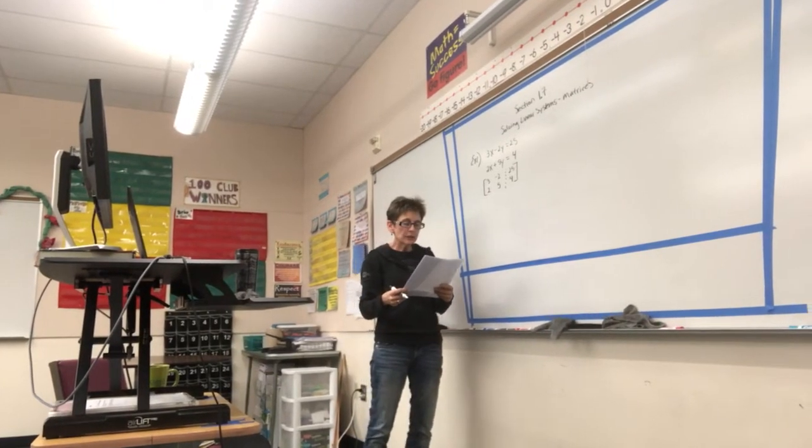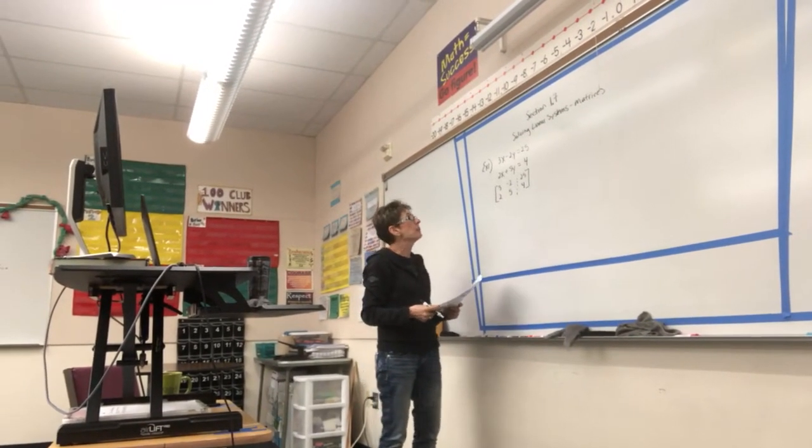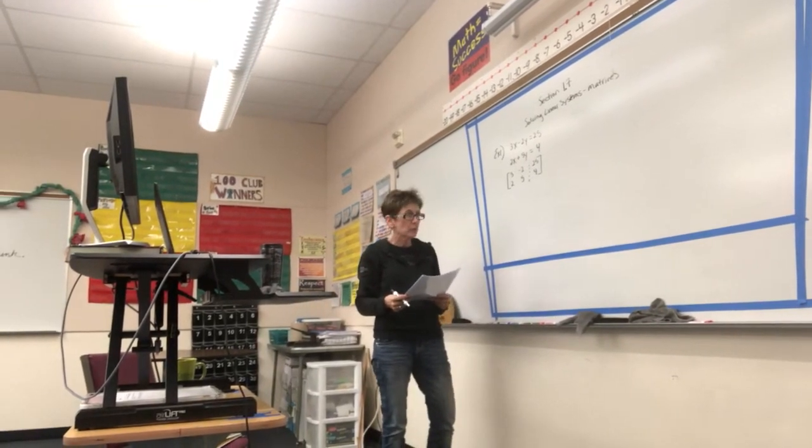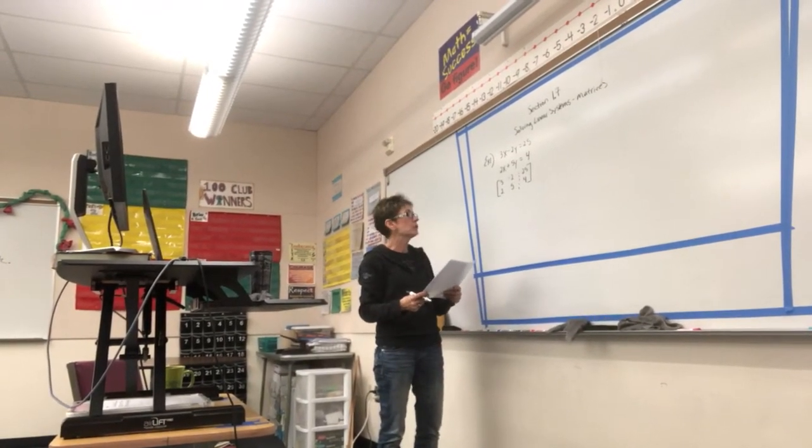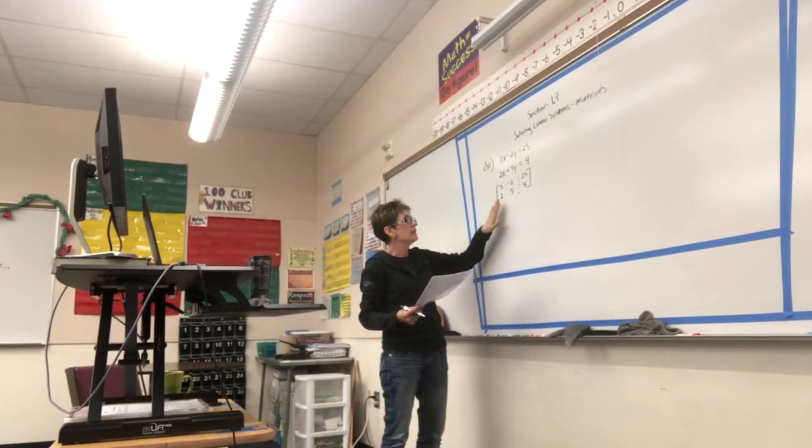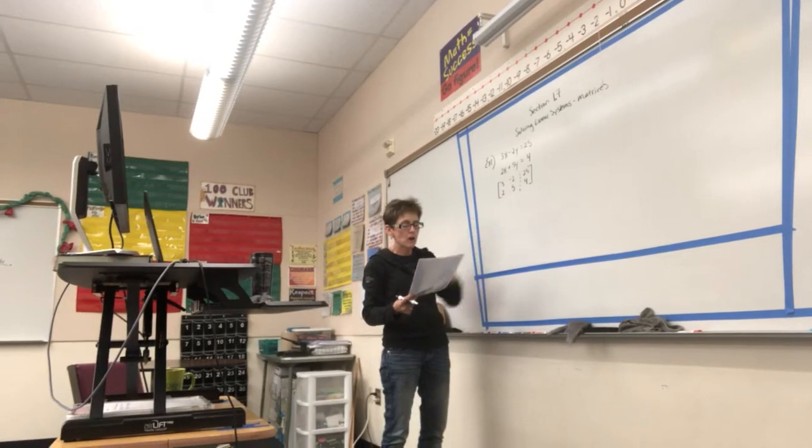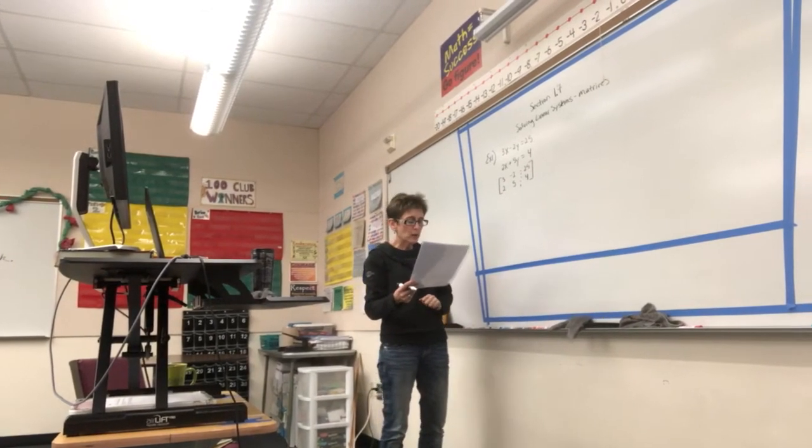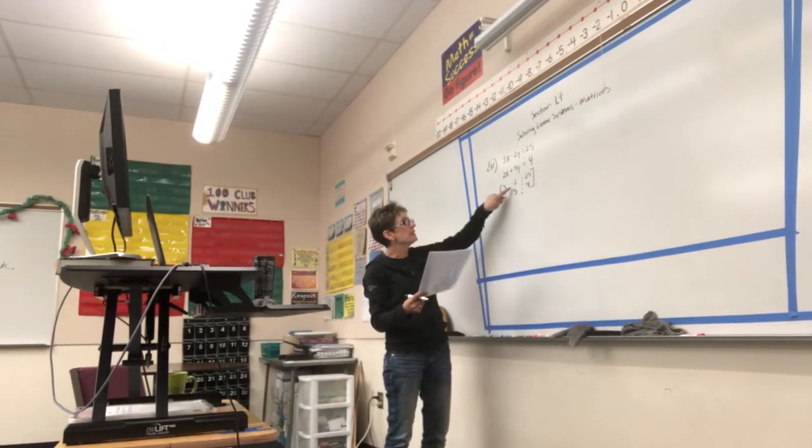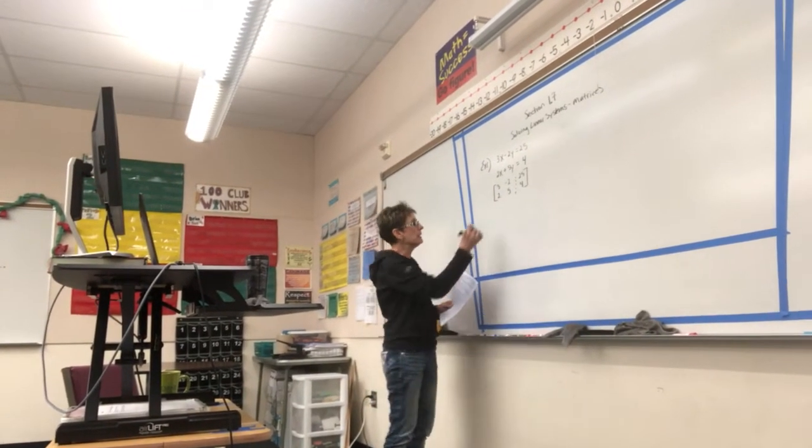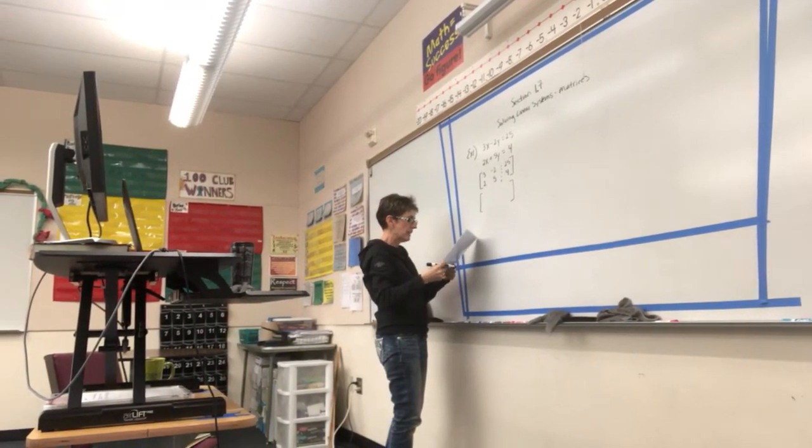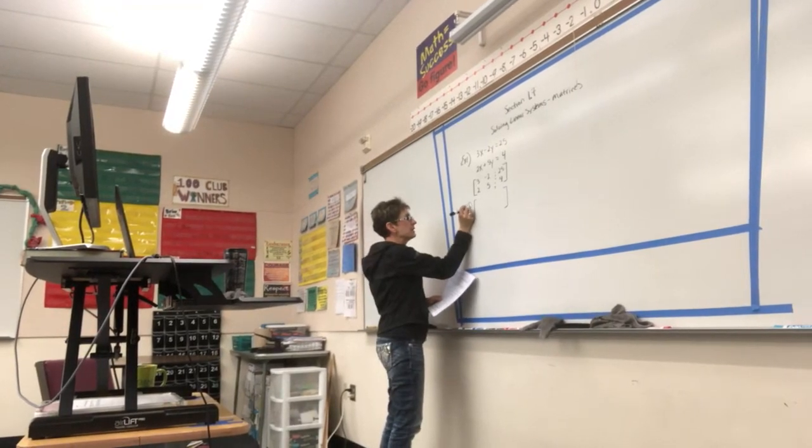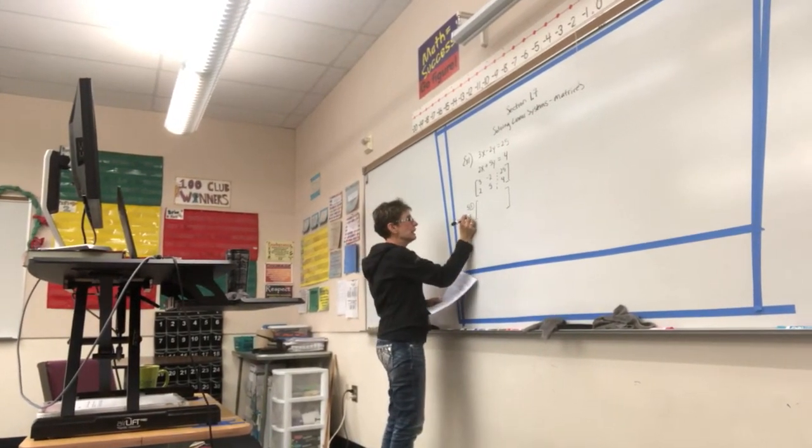We're essentially going to do the same thing that we did when we were trying to eliminate variables with our 3x3 systems in our last notes. We want to take whatever steps we need to to get the left side of this augmented matrix so that it says 1, 0, 0, 1. So, I've got to find a way to eliminate this negative 2 right here. I'm going to make a little note on the left-hand side of my document here of what I'm doing. I'm going to take 5 times equation 1 and 2 times equation 2.